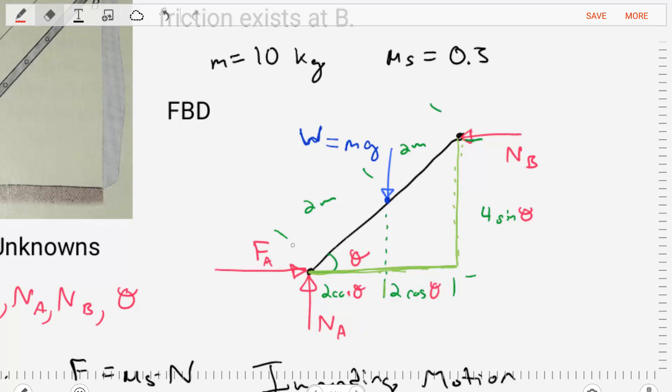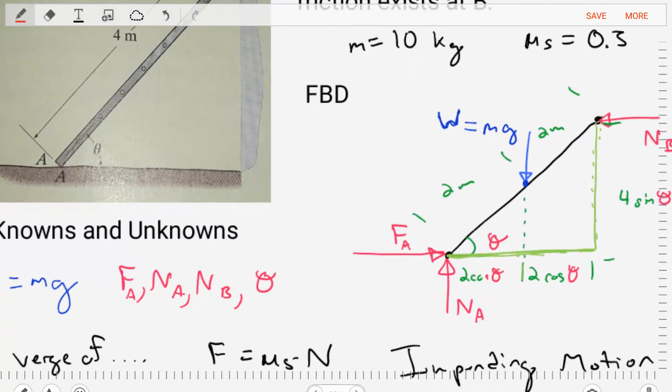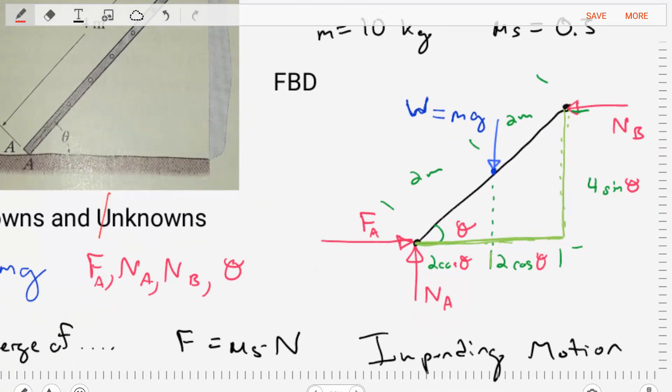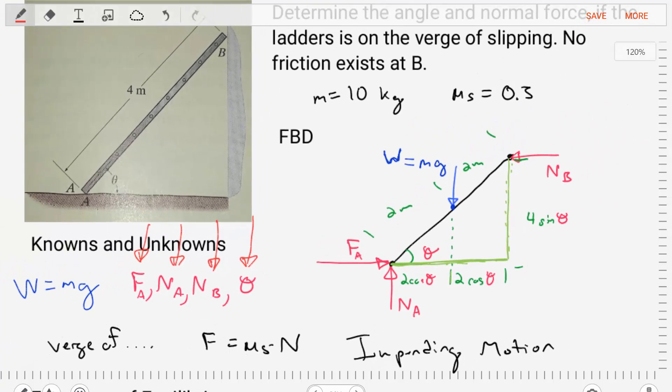So after replacing the support with the reactions and looking closely at this diagram, we can see that there are four unknowns that we're going to need to solve for. We need to find the frictional force at A and the normal force at A. We need to find the normal force at B, and we need to find the angle of that ladder.